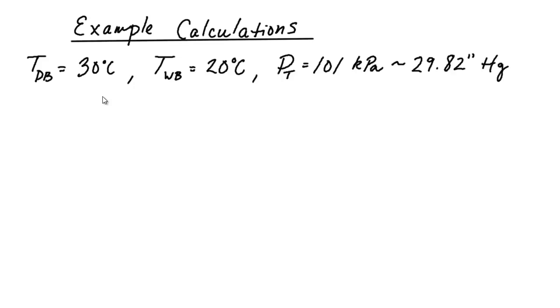Hello and welcome. This is the grand finale of our numerical calculations of psychometric properties for moist air. In this video we're going to be using all the equations that we previously derived for psychometric properties and starting from the dry bulb temperature, wet bulb temperature, and total pressure we're going to get all the psychometric properties that we would typically want in HVAC calculations.